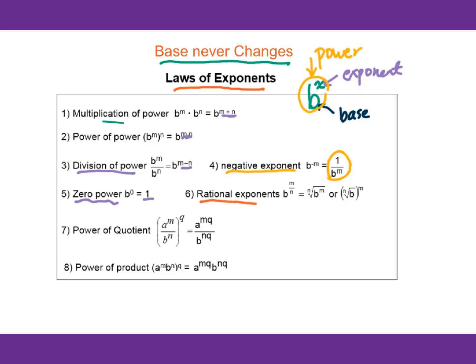For rational exponents, you get the corresponding radical form. For power of a quotient and power of a product, apply the exponent to each factor using the respective formulas.